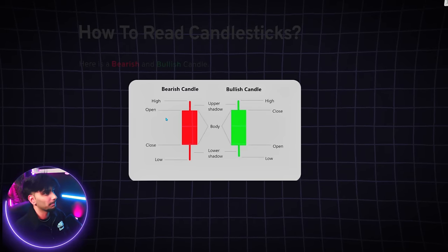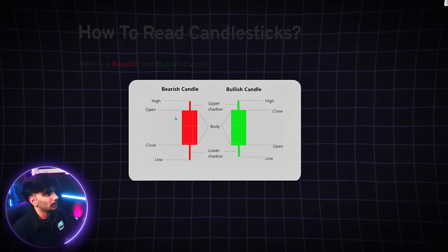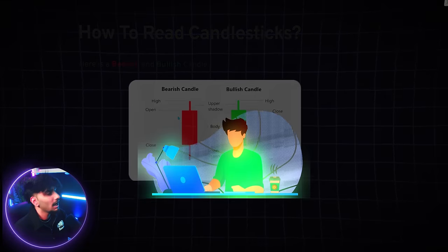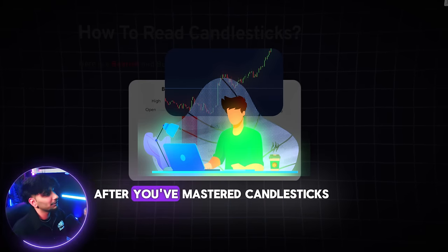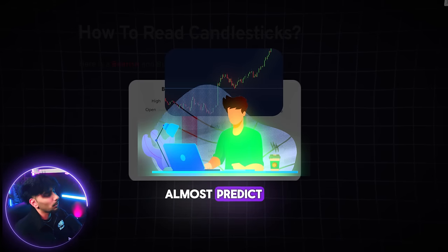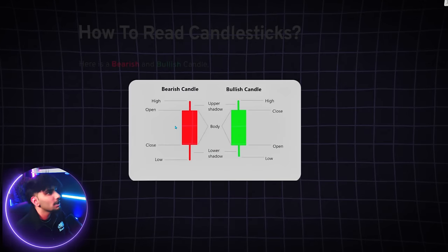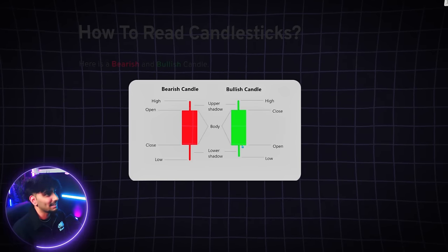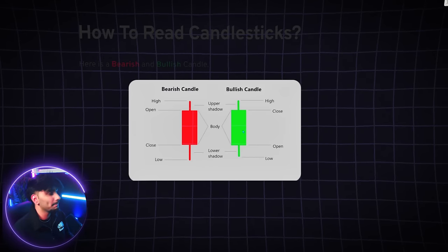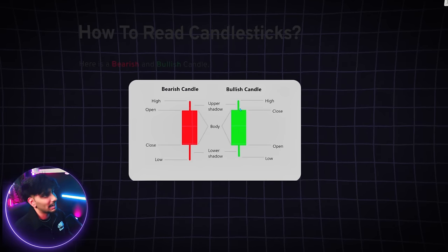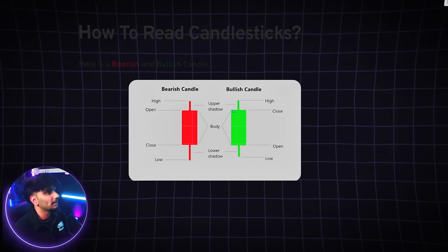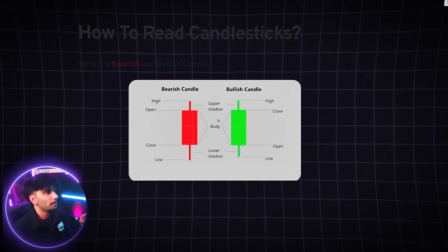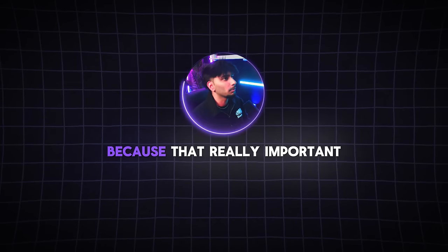This is important to understand because every single strategy and every single candlestick pattern depends on specific candles in which you enter. Once you've mastered candlesticks, you'll be able to almost predict how a candle closes based on how it's forming during the day. For the bullish candle it's the exact opposite — we open at the bottom, sellers try to bring it down, then buyers come back up to new highs, sellers try once more but fail, and we close up at the top. That's how bearish and bullish candlesticks are made.